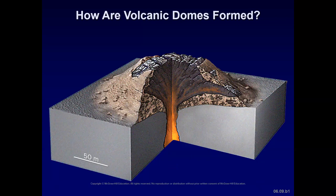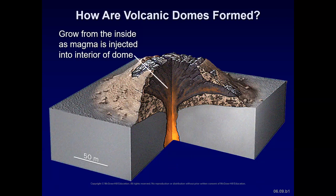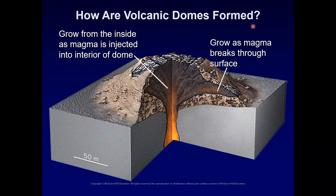How are volcanic domes formed? Volcanic domes grow from the inside as magma is injected into the interior of the dome. New material causes the dome to expand upward and outward. They grow as the magma breaks through the earth's surface, which also fractures the partially solidified outer crust on the dome.